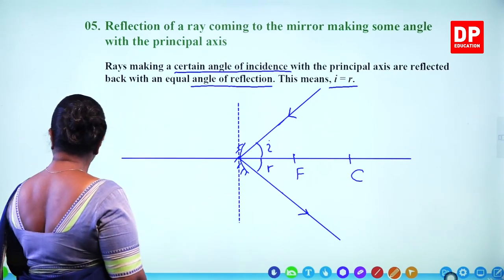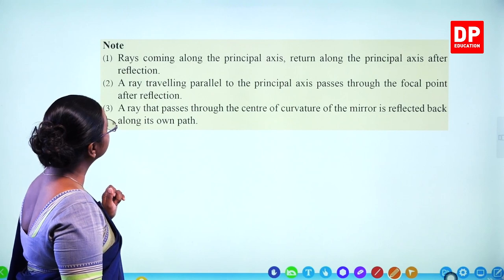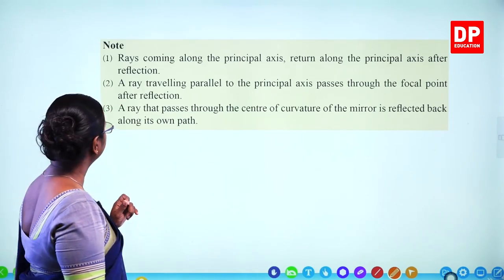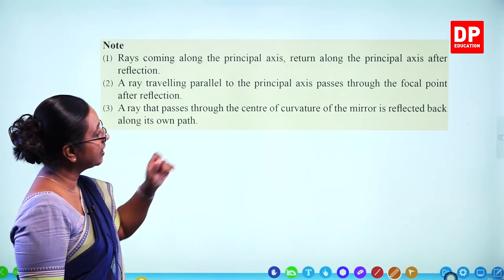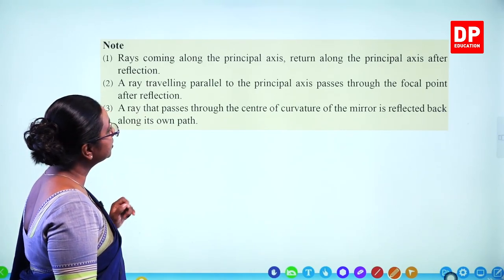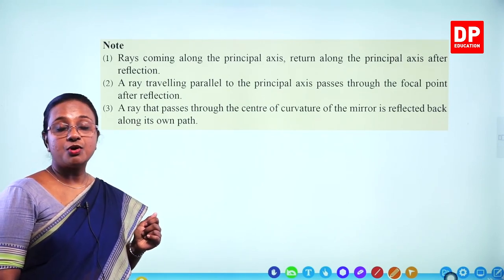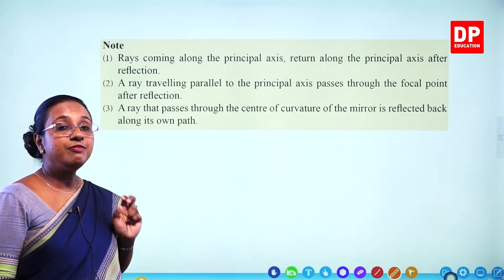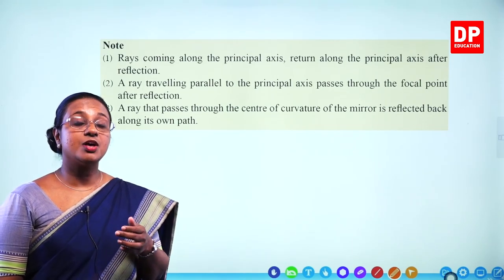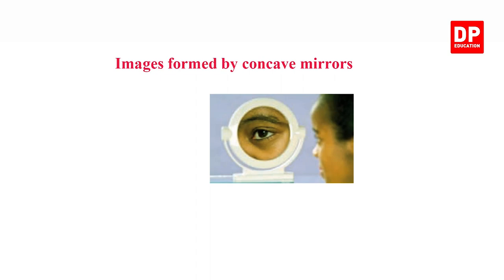Summary of the ray rules: rays coming along the principal axis return along the principal axis after reflection. A ray travelling parallel to the principal axis passes through the focal point after reflection. A ray that passes through the centre of curvature is reflected along its own path. Knowing these rules, it is very easy to draw ray diagrams for images formed by concave mirrors.